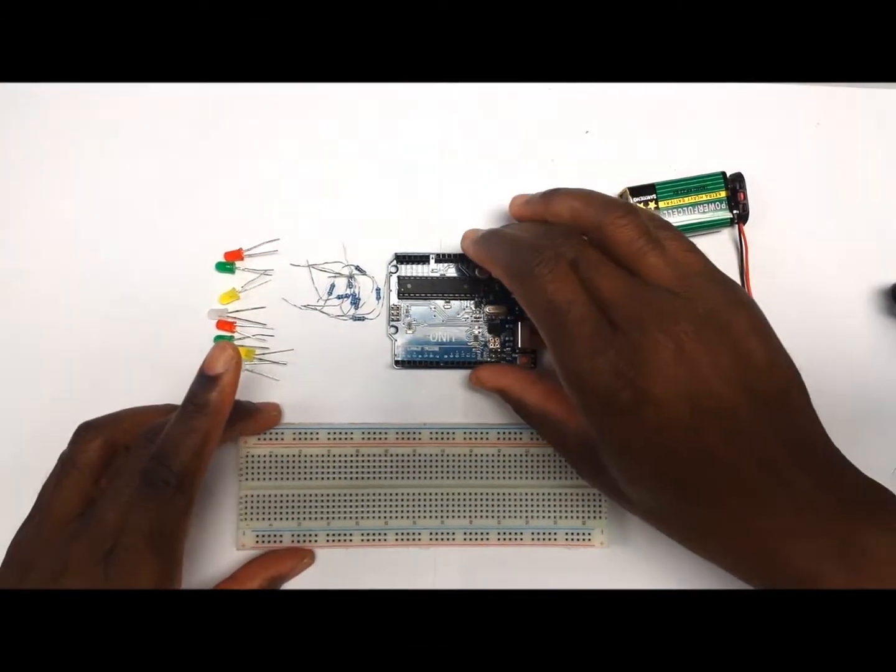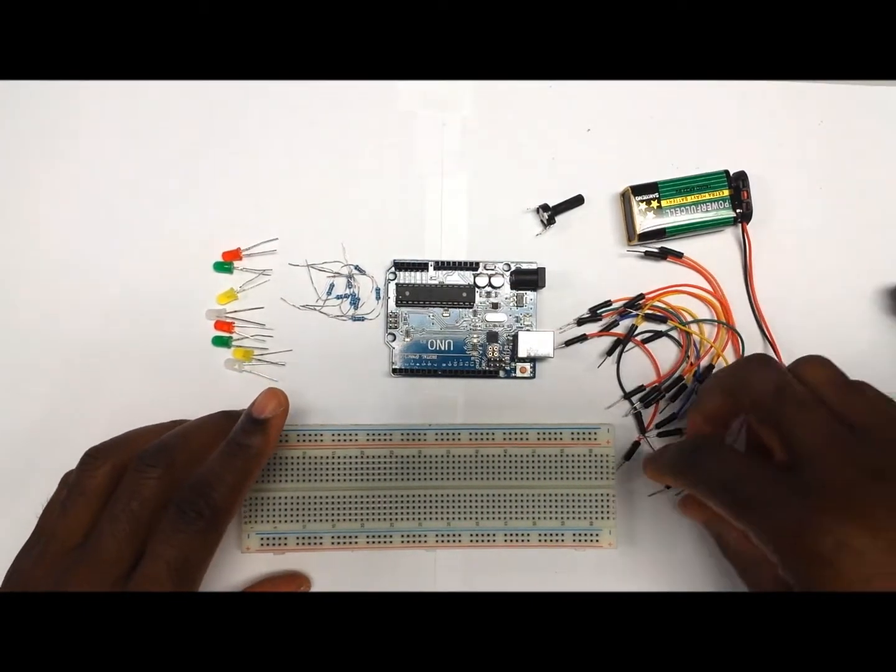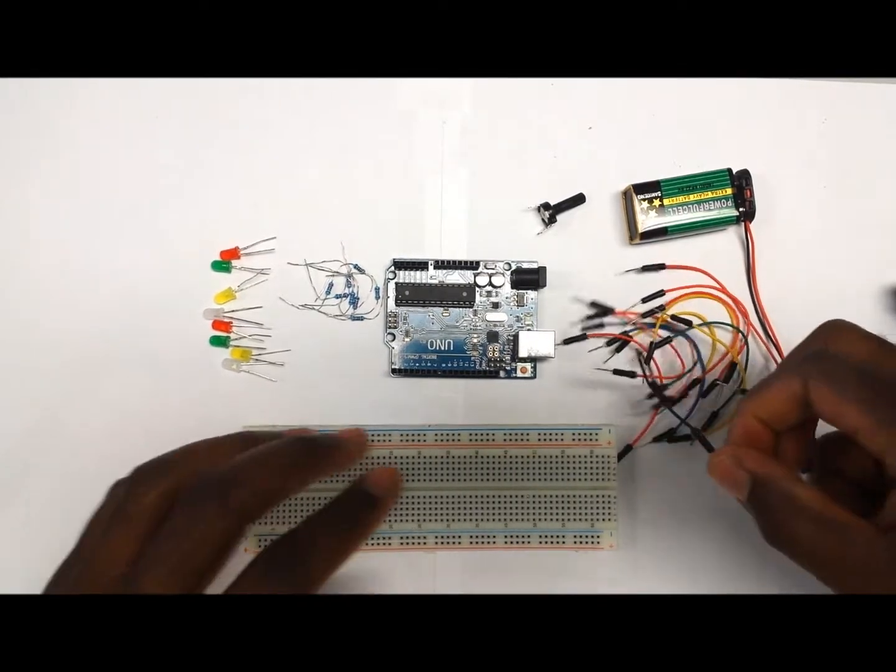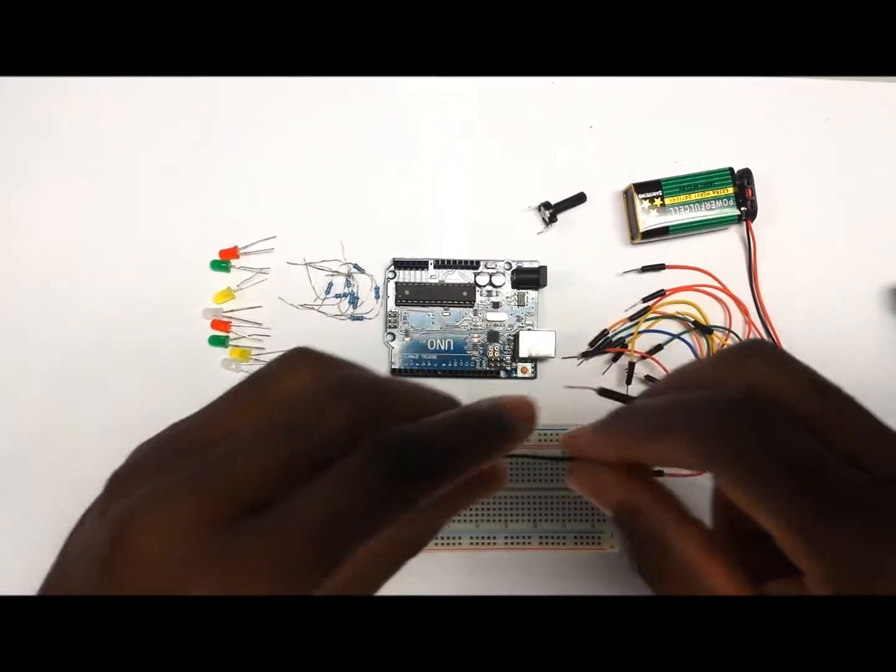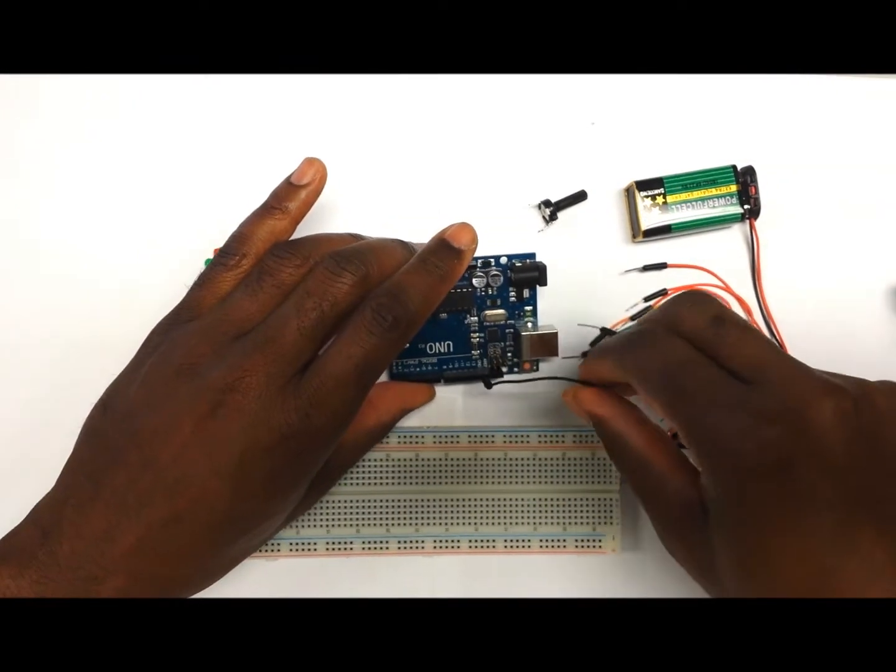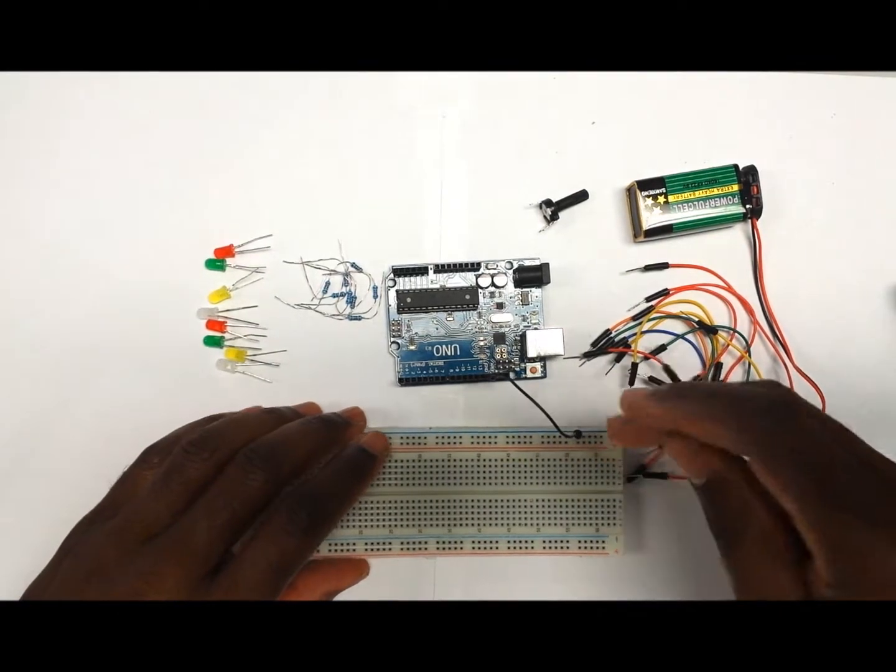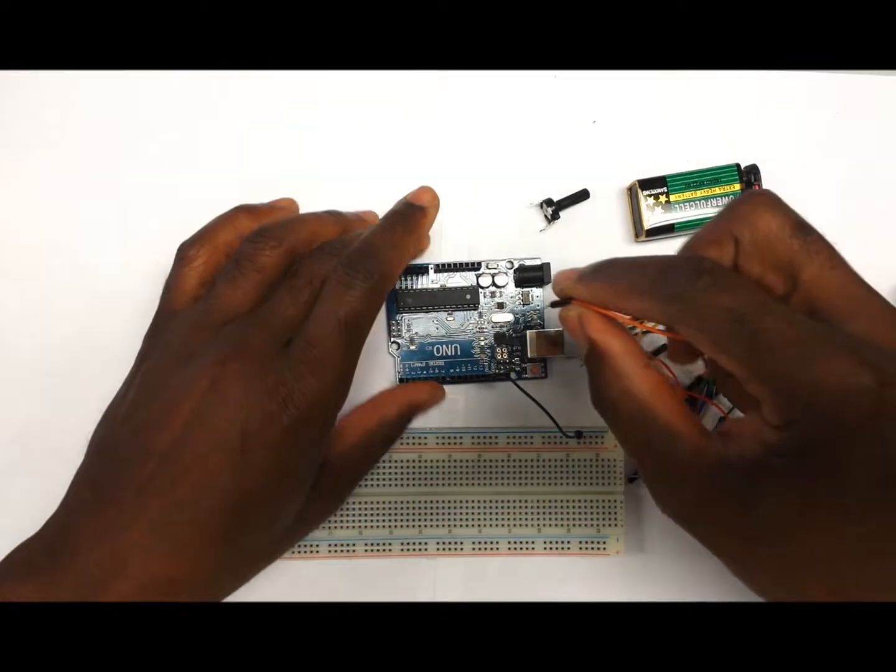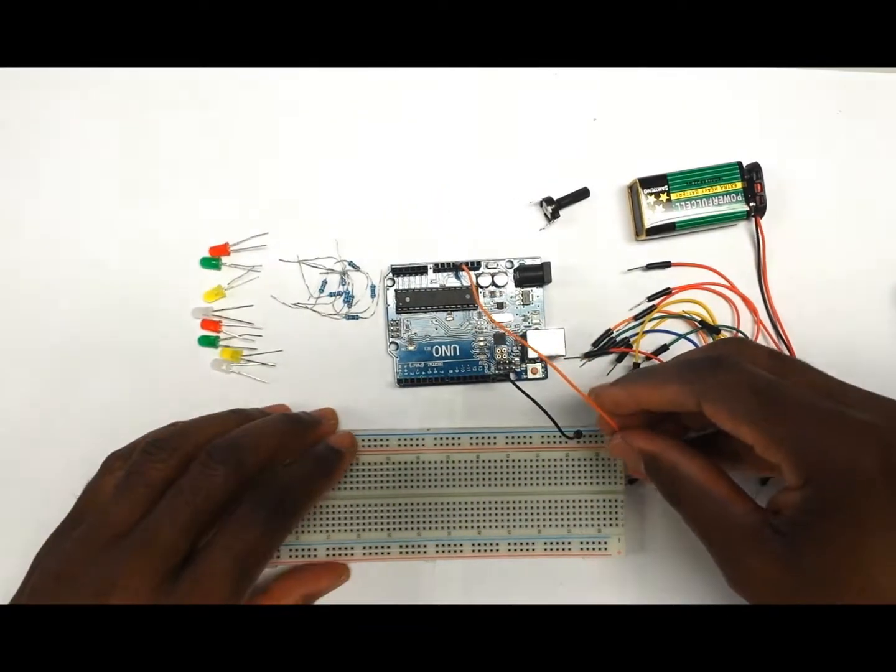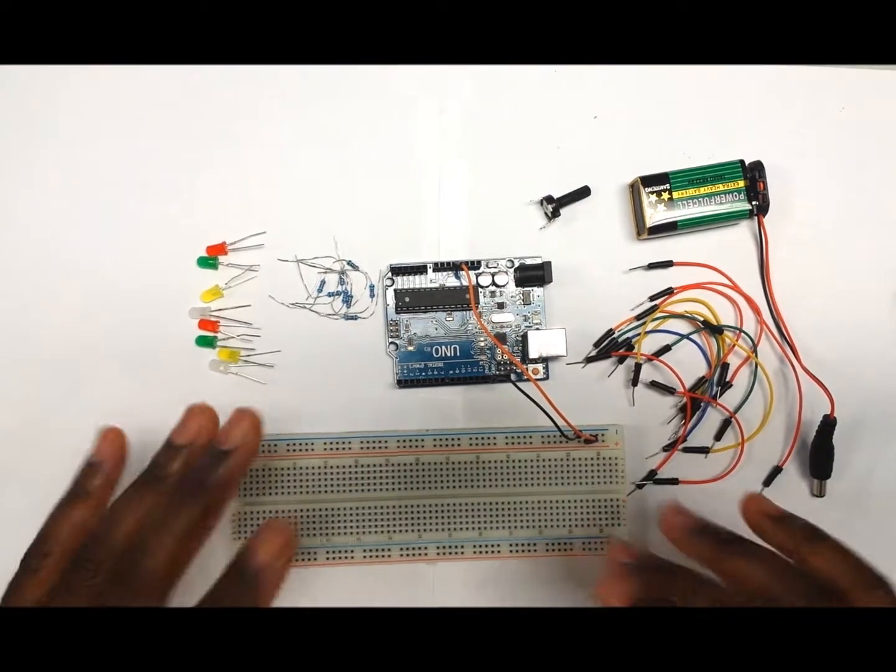The first thing that we want to do is to attach the Arduino to the breadboard by using two jumper wires. These are going to provide the power to the board. The first wire is going to go from the ground pin on the Arduino onto the negative rail of the breadboard. Then the next one is going to come from the 5 volt pin on the Arduino to the positive rail of the breadboard. So now we have the breadboard powered.